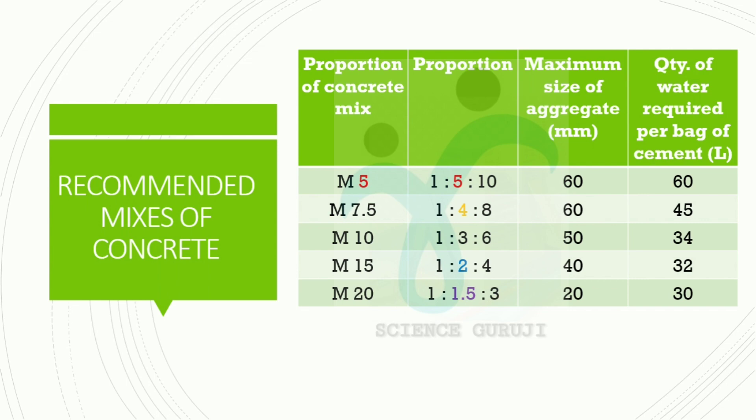Maximum size of aggregates: M5 is 60 mm, M7.5 is 60 mm, M10 is 50 mm, M15 is 14 mm, M20 is 20 mm. Quantity of water required for a bag of cement: M5 is 60 litres, M7.5 is 45 litres, M10 is 34 litres, M15 is 32 litres, M20 is 30 litres.